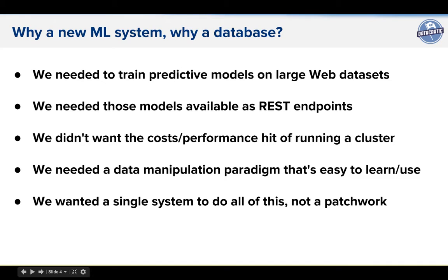One of the reviews when we submitted this paper basically said: why a new machine learning system? Why a database? The needs we had at Datacratic were that we needed to train predictive models on web scale data sets — billions of users, trillions of inputs. We needed those models available as REST endpoints very quickly so that they could be queried by web technologies, by browsers as REST APIs. We wanted to avoid the costs and performance hits of running a cluster. Hadoop, now Spark — these technologies are very powerful, but there's a vast amount of overhead and waste between the various cluster components talking to each other. If you can run something on one node, it's at least an integer multiple cheaper than running it on N nodes.